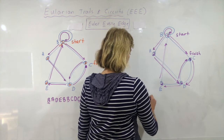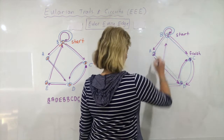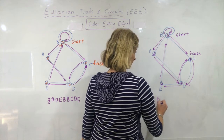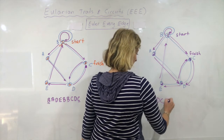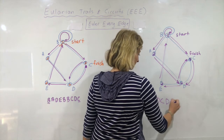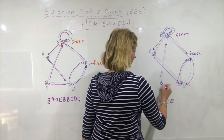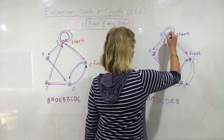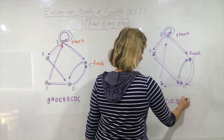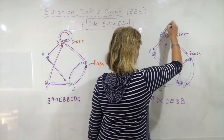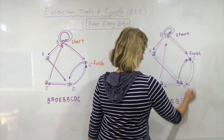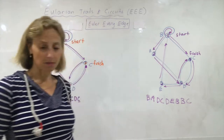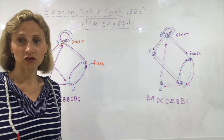So my Eulerian trail in this case would be: I started at B, went to A, then D, then C, then came back to D, over to E, up to B, went around B, and then came back to C. I finished at my odd vertex as I should have.